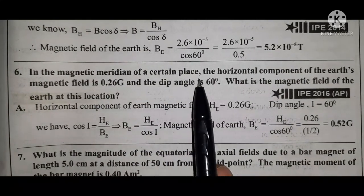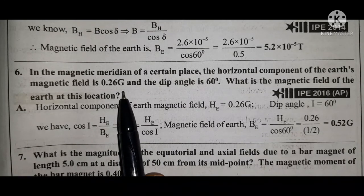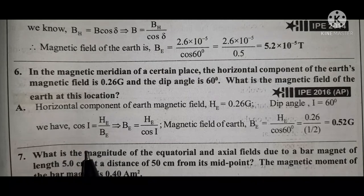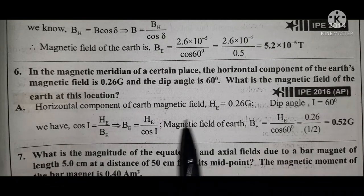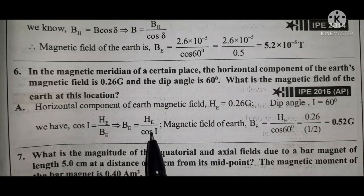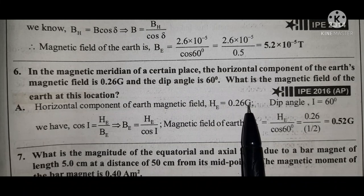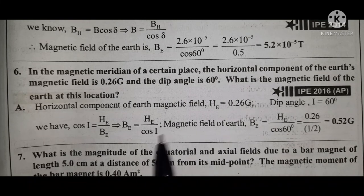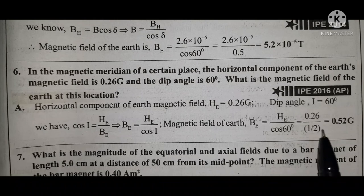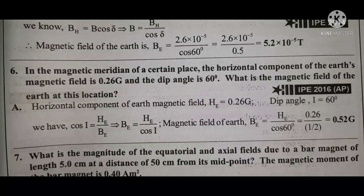Problem two: In the magnetic meridian of a certain place, the horizontal component of Earth's magnetic field is 0.26 gauss and the dip angle is 60 degrees. Find the magnetic field of Earth at this location. Using the same formula: B = B_H / cos δ = 0.26 / cos 60° = 0.26 / 0.5 = 0.52 gauss. The answer is 0.52 gauss.